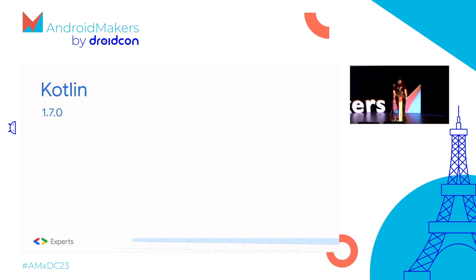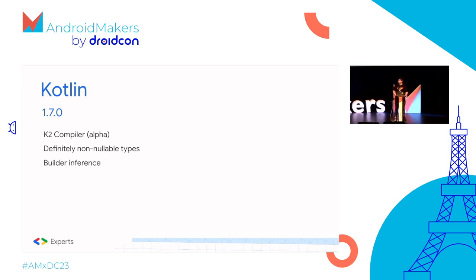Also Kotlin 1.7, with many improvements to generic type inference, where underscore can reference a type if it's already been implied. Definitely-not-null types. Build inference for types when using buildString, buildList, buildMap. The underscore operator and opt-in stability — the annotation needed when opting into using experimental annotations. Notably, the annotation itself was previously also an opt-in annotation, but that is no longer the case.